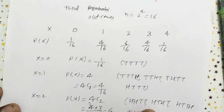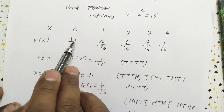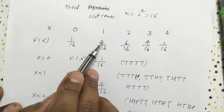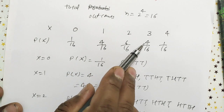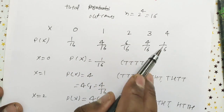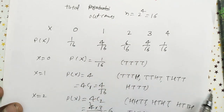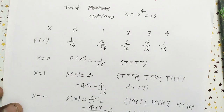When you add the numerators: 1 + 4 = 5, 5 + 6 = 11, 11 + 4 = 15, 15 + 1 = 16. So 16/16 = 1. The total probability sums to 1, as expected.